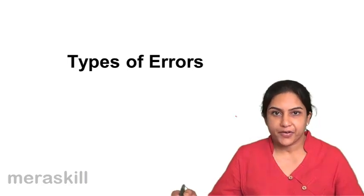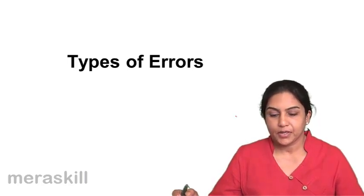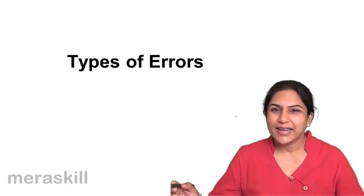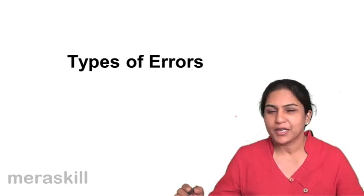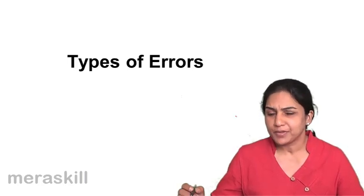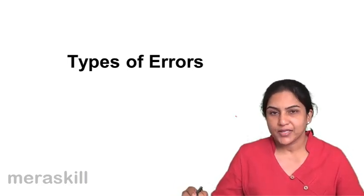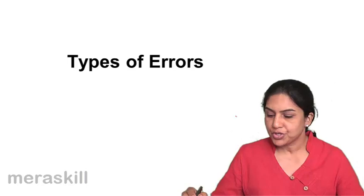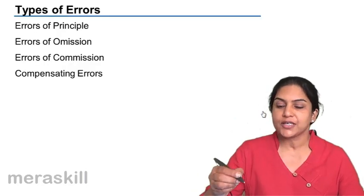Types of errors. What are the kinds of errors we could have? Let us quickly go through them. They are referred to as errors of omission, commission, principle, etc.